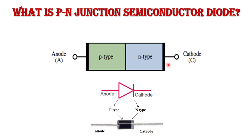Why is it called a diode? Because it has two electrodes — one on the P side and one on the N side. This is the circuit symbol of the PN junction diode. The anode terminal is on the P side and the cathode terminal is on the N side. The arrowhead indicates the direction of current flow in the PN junction diode.